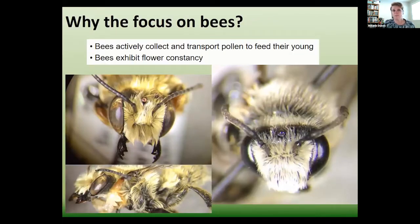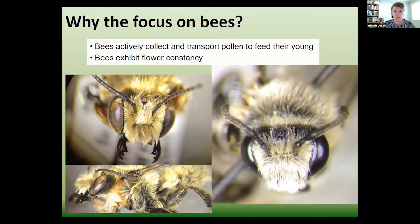Sometimes people ask me why the focus on bees. There are other pollinators — wasps, flies, butterflies, moths — but bees are a more dependable pollinator. They actively collect and transport pollen, eat it through their entire life, and feed it to their young. Butterflies and moths really depend on their host plants when they're a caterpillar, and they're a caterpillar a lot longer than they are a butterfly. Bees also show flower consistency, meaning certain guilds of bees are attracted to certain flowers.